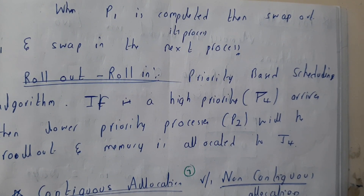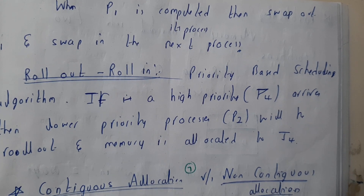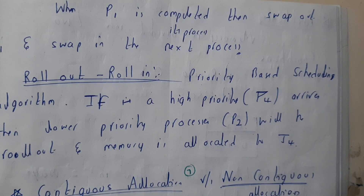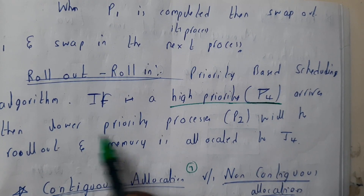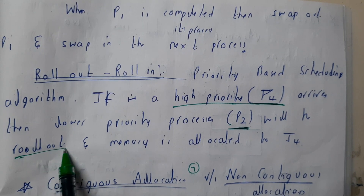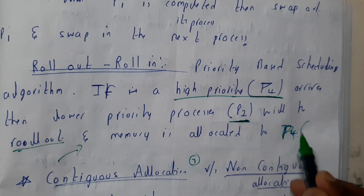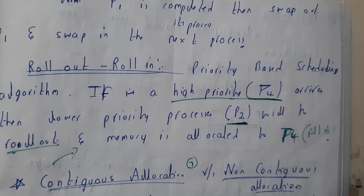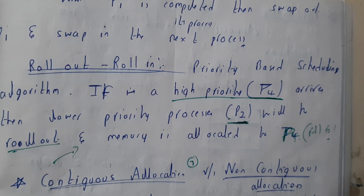We also use roll-out and roll-in. These are used in priority-based scheduling algorithms. If a high-priority process P4 comes into play, the low-priority process P2 — even if currently running — is rolled out, which is essentially a swap-out. Memory is then allocated to P4 via roll-in, which is essentially a swap-in. In the next tutorial, we will cover contiguous and non-contiguous allocation. Thank you for watching.